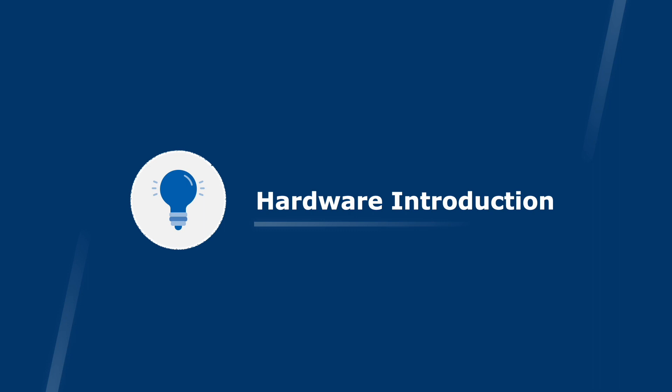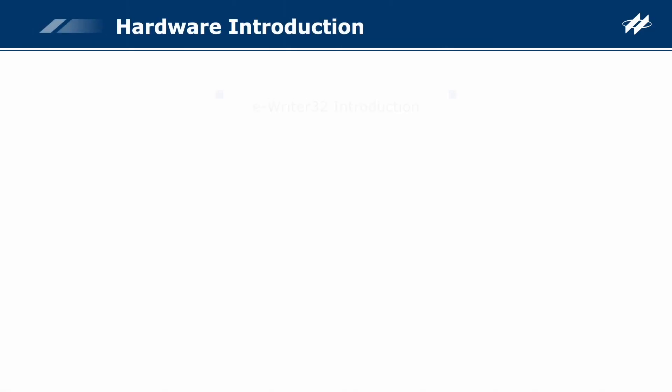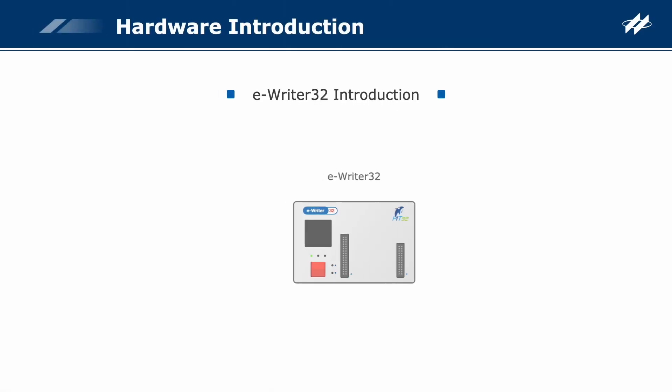Hardware Introduction. The eWriter32 is a writer designed by Holtec for programming the HT32 series of Flash MCUs, which together with Hope3200 can be used for data download and programming.